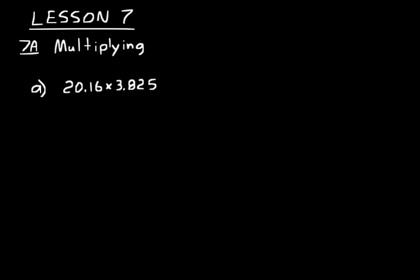First, let's talk about multiplying decimal numbers. Remember, order doesn't matter in multiplication. What you do is get rid of all of your decimal places and then add them back in at the end. For example, look at 20.16 — you'd move it over to the right 2 places to get rid of the decimal places. For 3.825, you'd move it over 3 places. You do this because you want to just work with whole numbers.